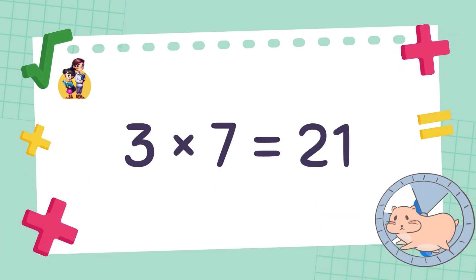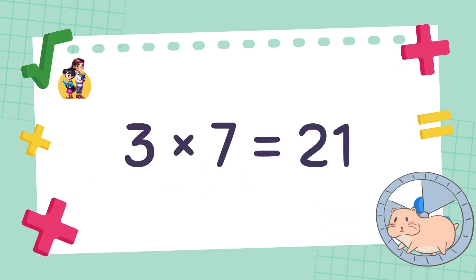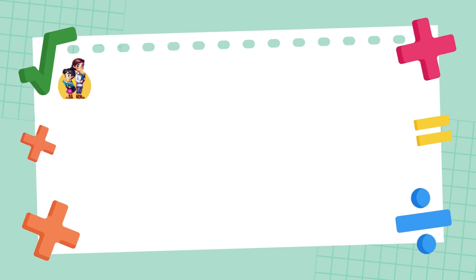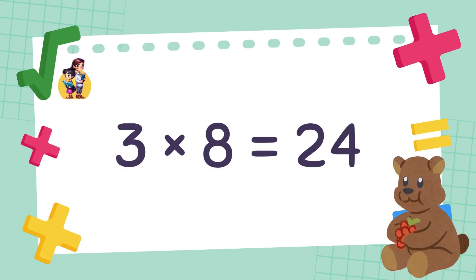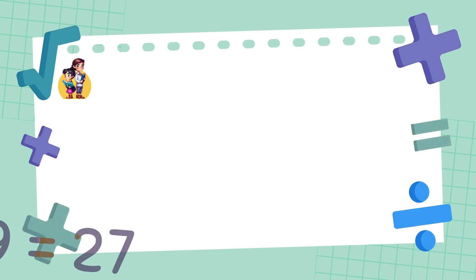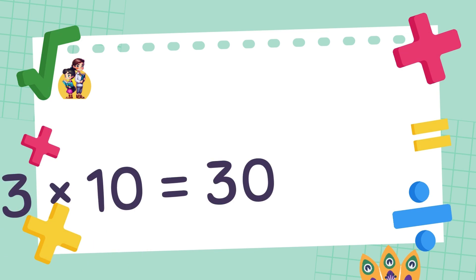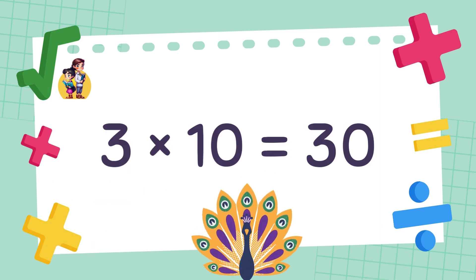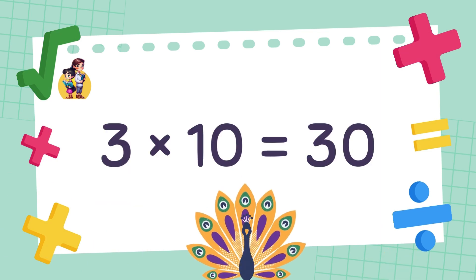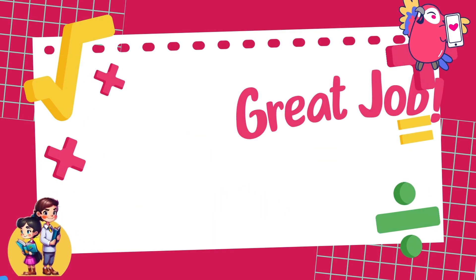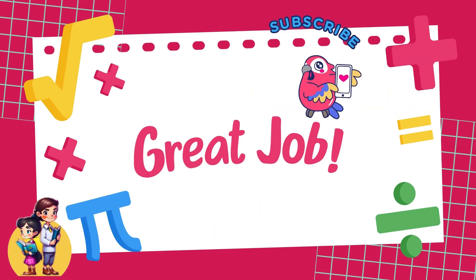3 times 7 is equal to 21. 3 times 8 is equal to 24. 3 times 9 is equal to 27. 3 times 10 is equal to 30. Great job!